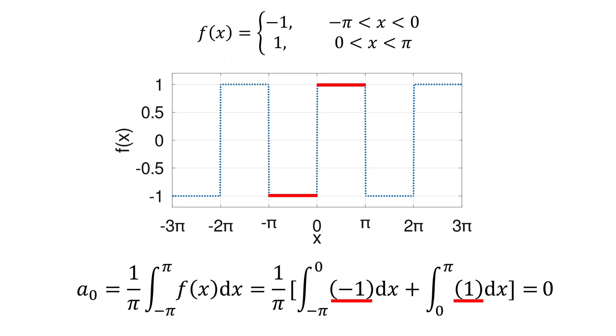What a0 equal to 0 means is that the average of fx equals 0. Graphically, the positive side of the square wave cancels out the negative part, so the average of fx equals 0, which makes sense.